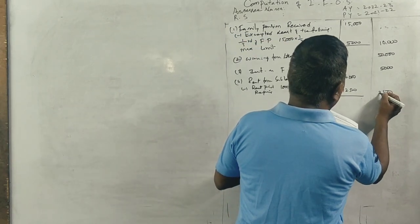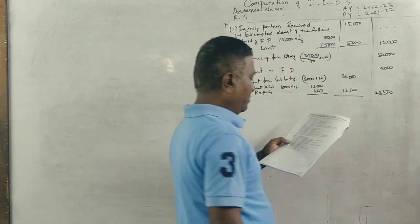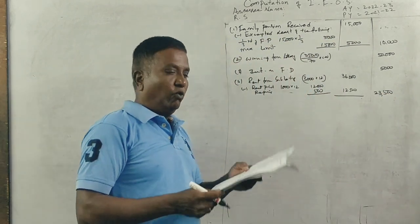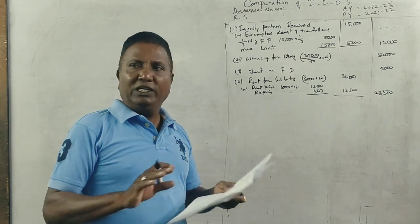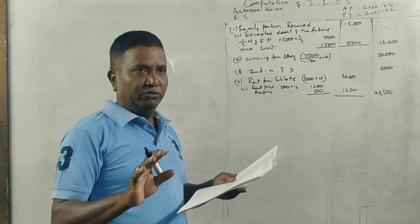And remaining amount is 500. Total 12,500. Remaining is 23,500. It is a sublet portion.